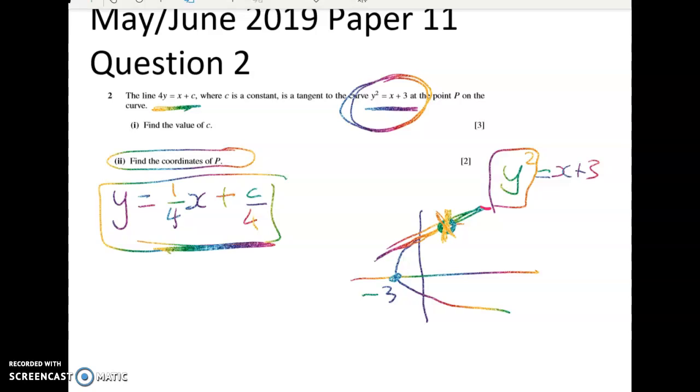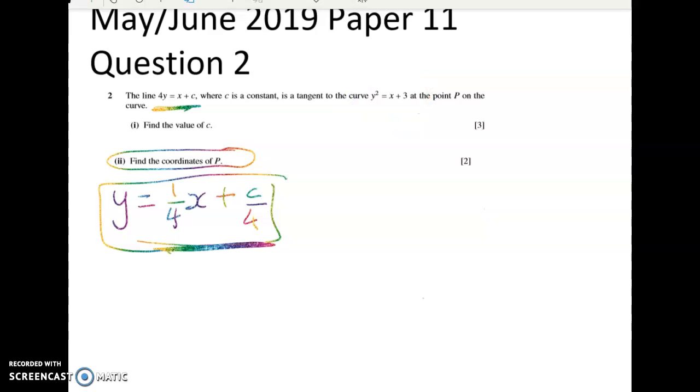Now the way we do this is that we equate the two equations and we're looking for the place where there is one solution to that pair of simultaneous equations. And that's because we're looking for a tangent to a curve and as soon as you think about one solution where you've got a quadratic you should be thinking about having a discriminant equal to 0 and that is indeed how we're going to solve this question the first way.